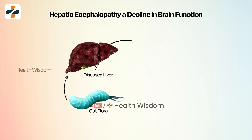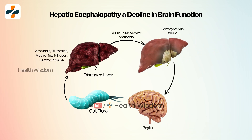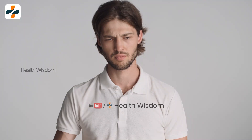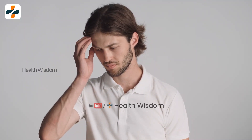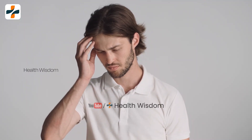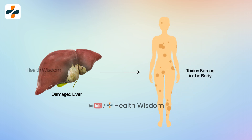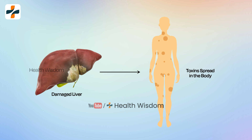Hepatic encephalopathy is a decline in brain function that occurs when the liver is unable to remove toxins from the blood, allowing those toxins to reach the brain. When the liver is damaged, these poisons or toxins can build up in the bloodstream and affect the function of the nervous system.